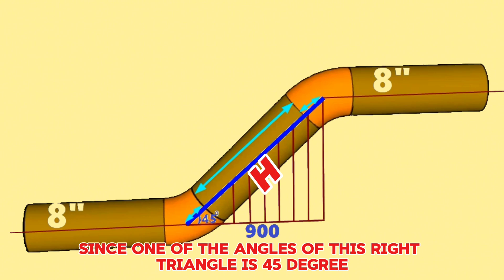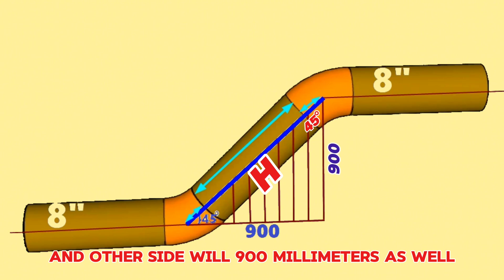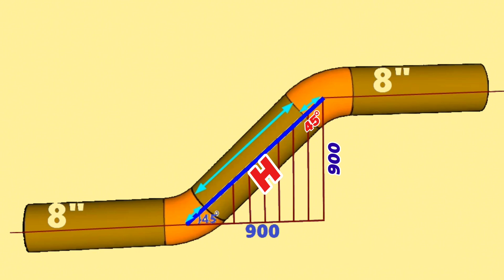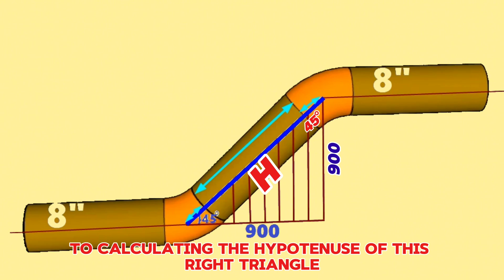Since one of the angles of this right triangle is 45 degrees, automatically the other angle will be 45 degrees and the other side will be 900 millimeters as well. We will use the Pythagorean theorem formula to calculate the hypotenuse of this right triangle.